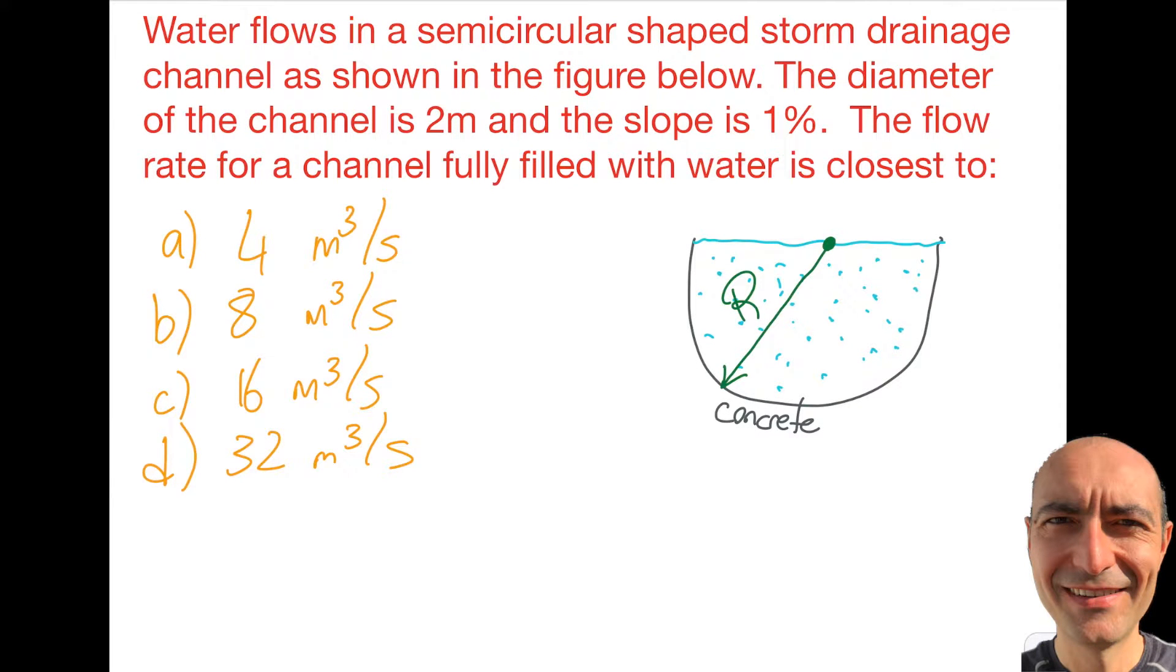Let's solve a question that involves an open channel. In this particular case, I have a semicircular shaped storm drainage channel. I said that this is the best design in terms of flow per unit cross-sectional area.